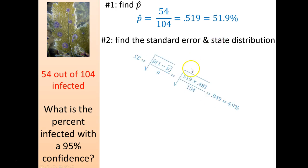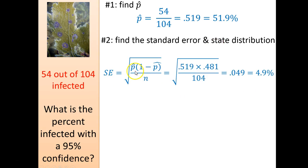I find the standard error and state the distribution. So my standard error, I plug all the numbers in for that. I get 4.9. So the distribution is my P hat, and then my standard error.